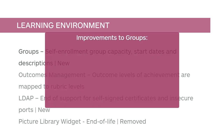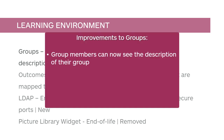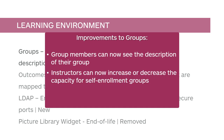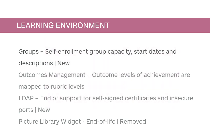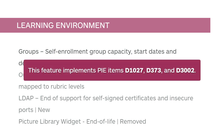This feature includes three improvements to groups. Group members can now see the description of their group. Instructors can now increase or decrease the capacity for self-enrollment groups after they have been created and prior to the group sign-up expiry date. Instructors can also set start dates for self-enrollment groups. For more information, review the Release Notes. This feature implements PI Items D1027, D373, and D3002.